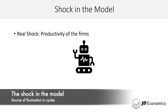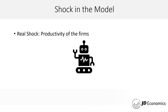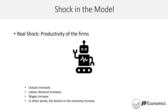What's going to be the shock in the model? The shock is going to be the productivity of the firms. When the firms are more productive — if there is a shock that increases their productivity — they are going to increase their output, demand more labor, and wages are going to increase. When there is a productivity shock, the factors in the economy are going to increase. This is what causes fluctuations in real GDP over time: a productivity shock on the firms' technology drives the business cycles.